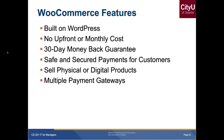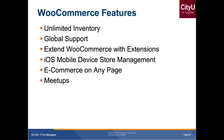WooCommerce is open source with no upfront or monthly cost, and offers a 30-day money-back guarantee for certain services. It provides safe, secure payment integrations — for example Stripe and Square — and you can sell physical or digital products with multiple payment gateways. You can sell internationally with global support, and it also offers unlimited inventory, the ability to extend WooCommerce with extensions, and mobile device store management.